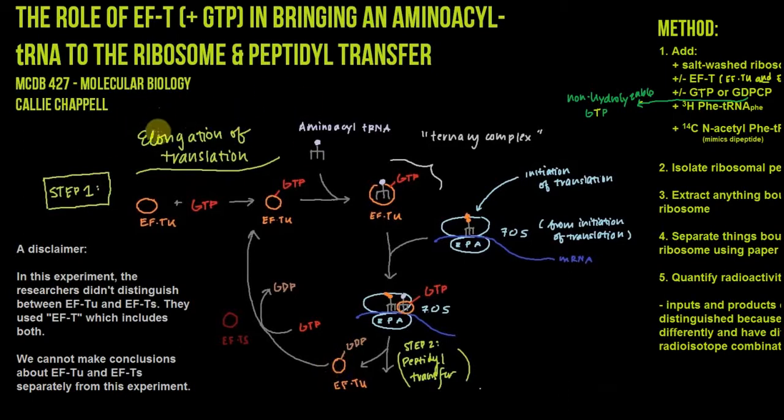First, we're looking at the elongation of translation. The first thing that happens is association between EF-Tu and GTP. After EF-Tu and GTP are associated, it then associates with an aminoacyl tRNA to form this ternary complex that combines all three. Then that associates with the 70S ribosomal complex that already has a tRNA here in the P-site.